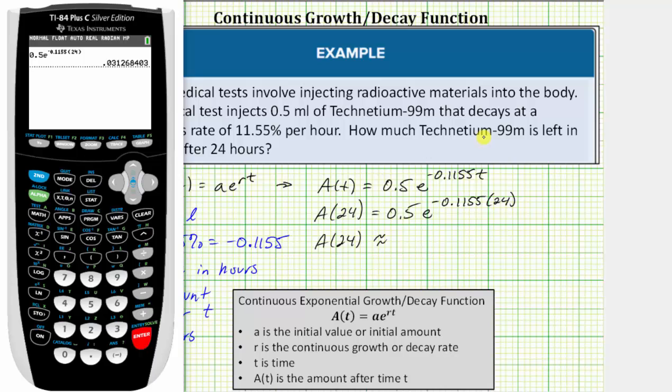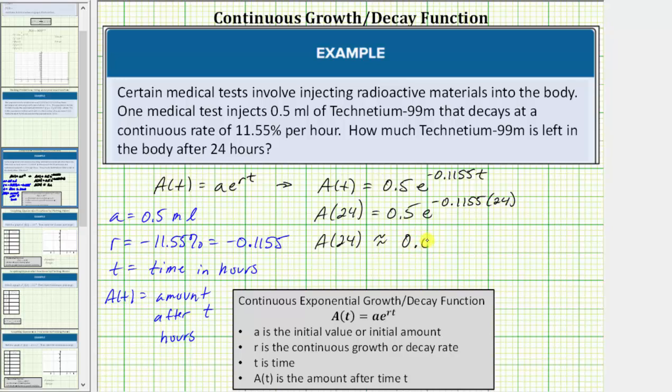We're not told where to round. Let's round to four decimal places. So A(24) is approximately 0.0313, and the units would be milliliters.